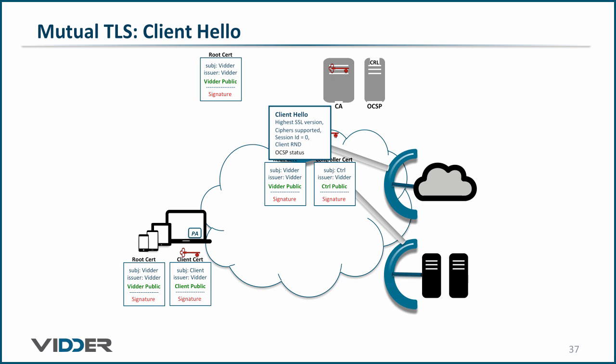The second is the list of TLS ciphers the client supports. As you saw in a previous video, VITR supports a very, very secure TLS cipher. Third is the session ID, which will always be zero for initiating new sessions. The fourth is the client random number consisting of four bytes of the present time and 28 bytes of random bits. Finally, the client tells the server that it wants the OCSP response stapled to the server hello message.